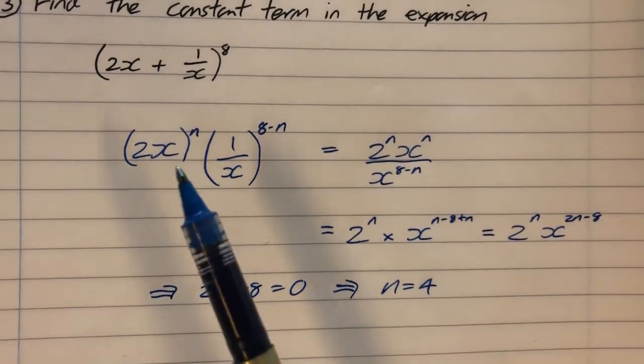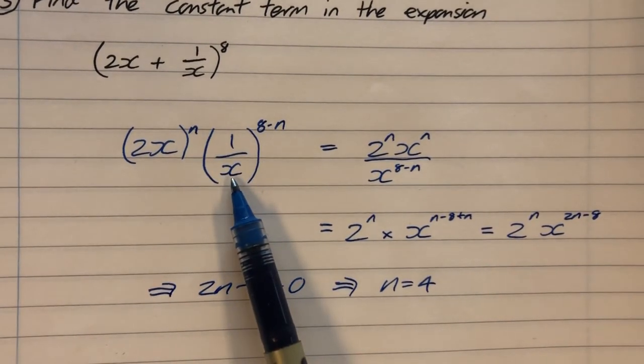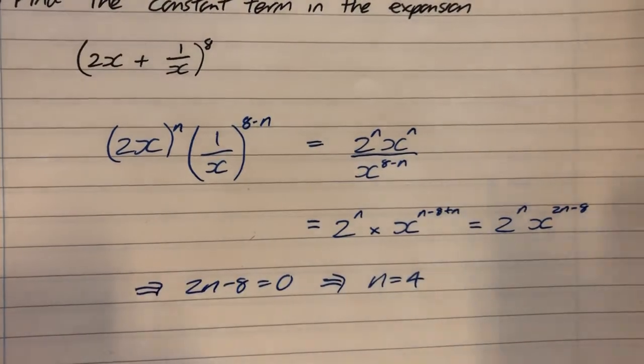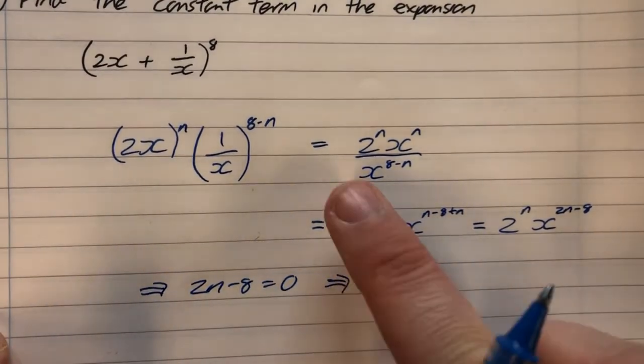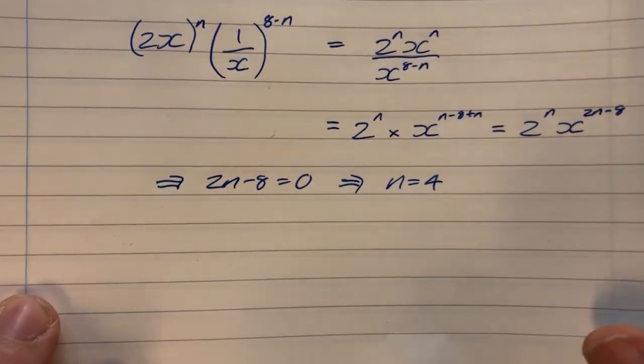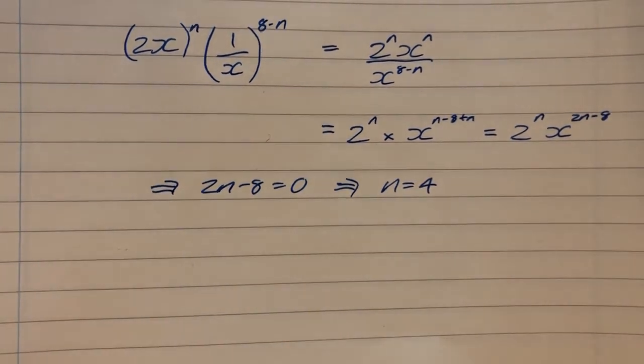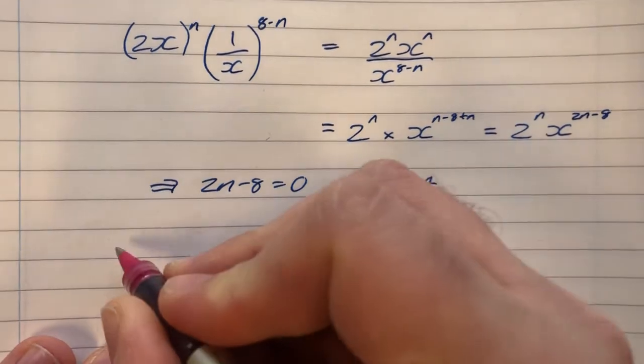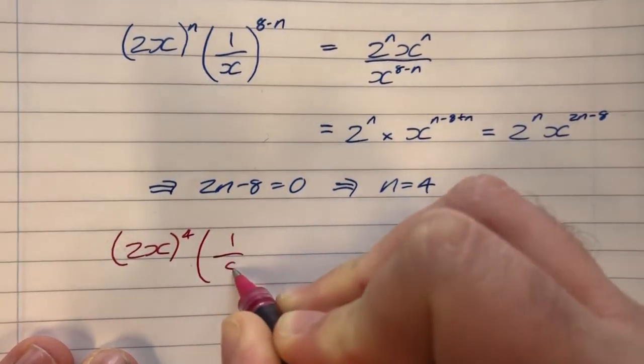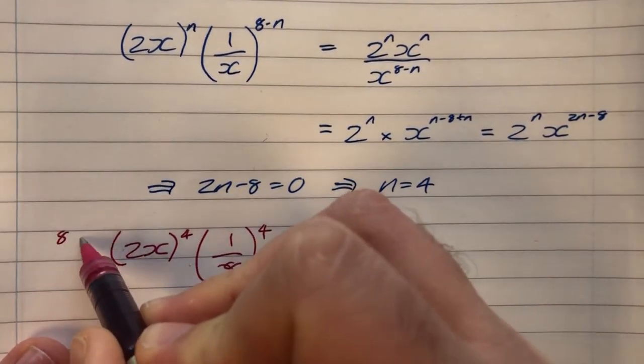And that makes sense, because if I have x to the 4 on top of the fraction and x to the 4 on the bottom, then they're going to cancel out. And if you can spot that n is 4 from that, then by all means just jump into it. But that's the kind of algebra that's running behind it. So I want the term, the fourth term in this, or fifth term in this expansion. So that's going to give me 2x to the power of 4. 1 over x to the power of 4. And then how many ways are there of doing that? Well, it's 8C4.